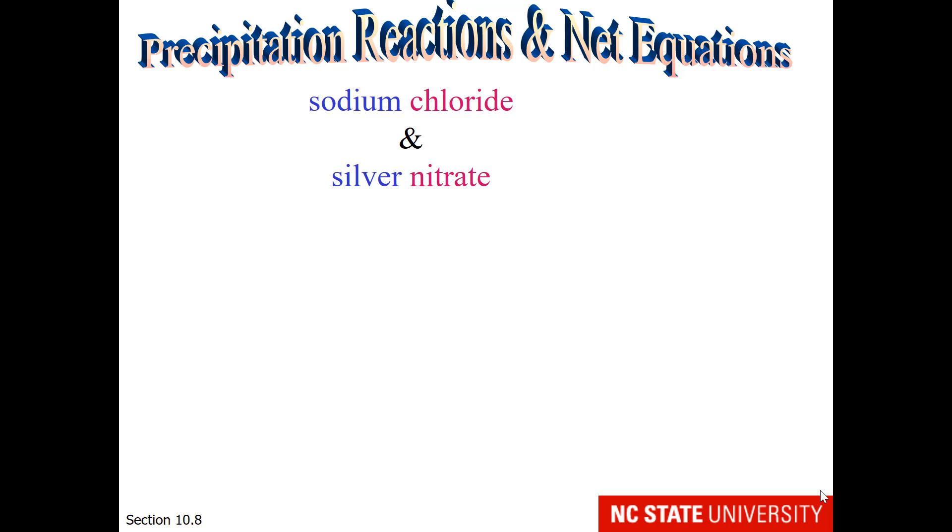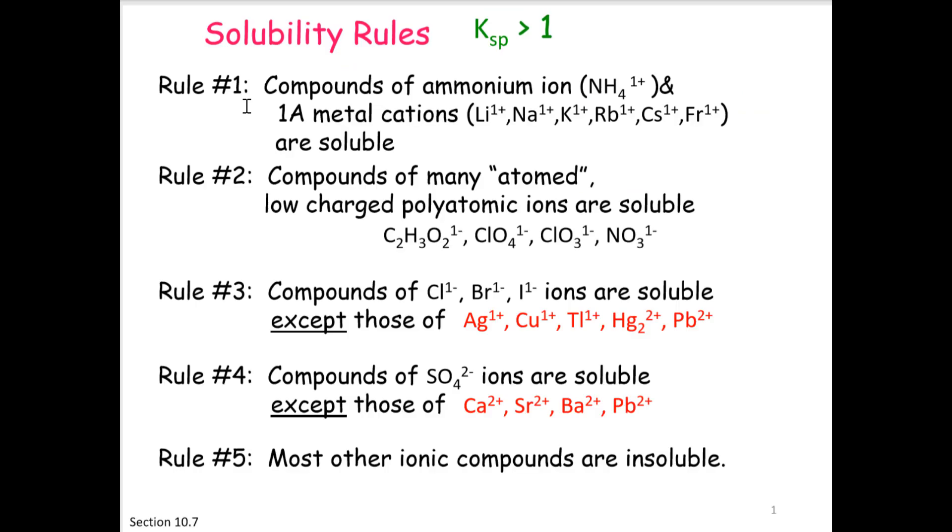Imagine that you have two solutions, one of sodium chloride and one of silver nitrate. Here are the molecular formulas for these ionic compounds. Sodium chloride is soluble in water. The Ksp is much, much greater than 1. If you are not sure of this from personal experience, you could always check the solubility rules, and group 1A metal cations are soluble.